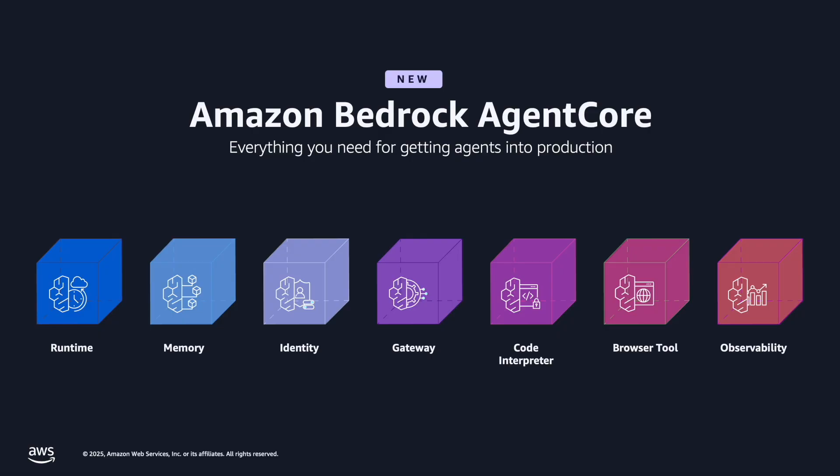Amazon Bedrock Agent Core has seven pillars. Starting with Agent Core Runtime — a secure serverless runtime built for deploying and scaling AI agents and tools, regardless of any frameworks or any model. Customers can securely and reliably run any type of agents, including multi-model, real-time, or long-running agents, with workloads running up to eight hours.